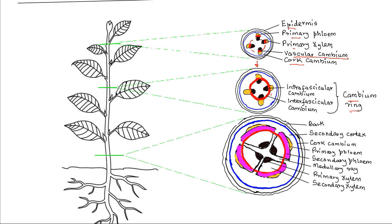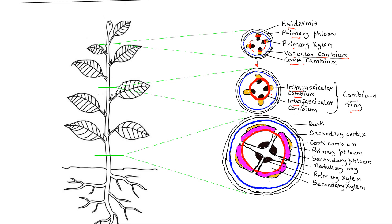The cambium within the vascular tissue is known as the intrafascicular cambium, while the cambium that is in between the vascular tissues is known as the interfascicular cambium.